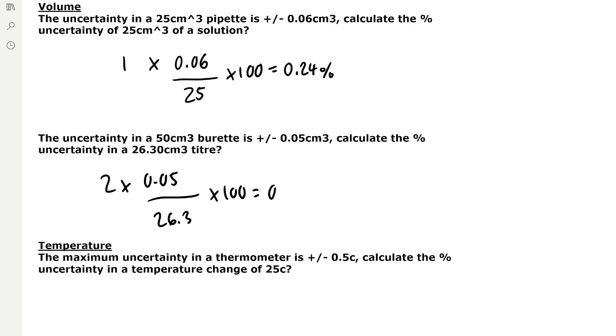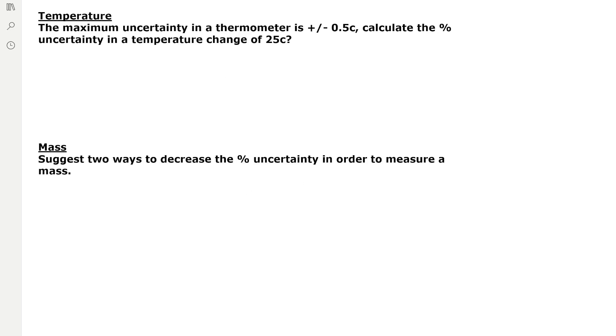Then for temperature, the maximum uncertainty in a thermometer is plus or minus 0.5 degrees Celsius. Calculate the percentage uncertainty in a temperature change of 25 degrees Celsius. The key word here is change. If we're finding a temperature change, then we have to measure two temperature values.